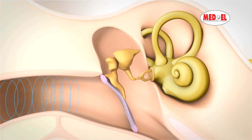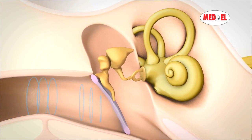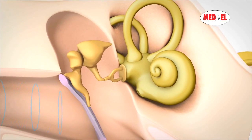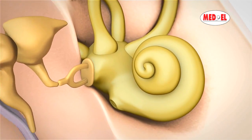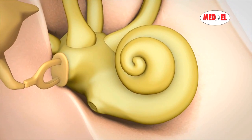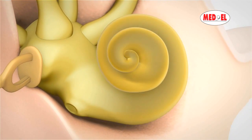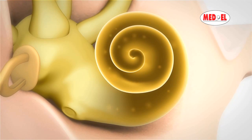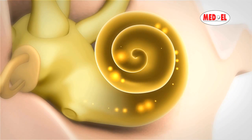Sound vibrations move along the ossicular chain and into the inner ear. Within the inner ear, the cochlea plays a central role. It is here that the mechanical energy of sound is converted into complex electrical signals, which are then passed on to the brain.